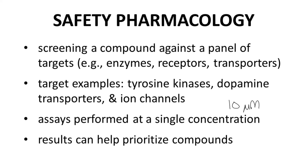Researchers often report panel results generally, such as compound X showed activity on two of 44 targets in a panel. Compounds with activity on more targets in the panel represent a higher collective risk. Panel activity can be used to prioritize or deprioritize compounds for advancement in a discovery program.